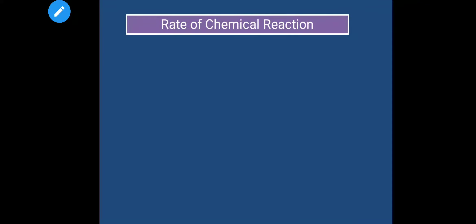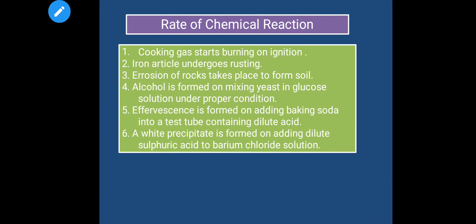Rate of chemical reaction — let's see some examples. First, cooking gas starts burning on ignition. Second, iron articles undergo rusting. Third, erosion of rocks takes place to form soil. Fourth, alcohol is formed on mixing yeast in glucose solution under proper conditions. Fifth, effervescence is formed on adding baking soda into a test tube containing dilute acid. Sixth, a white precipitate is formed on adding dilute sulfuric acid to barium chloride solution.